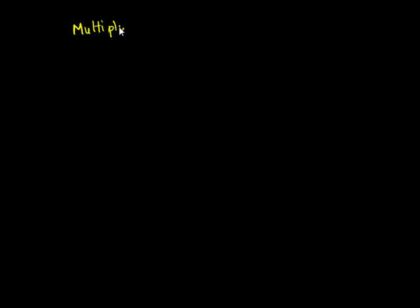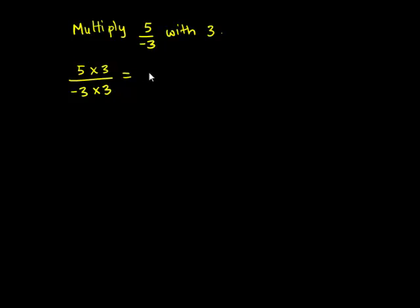To obtain the next equivalent number of 5 upon negative 3, we have to multiply 5 upon negative 3 by 3. This gives, when multiplied by 3 both in the numerator and in the denominator, 5 times 3 is 15, upon negative 3 times 3 is negative 9.